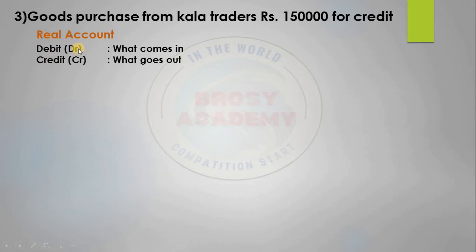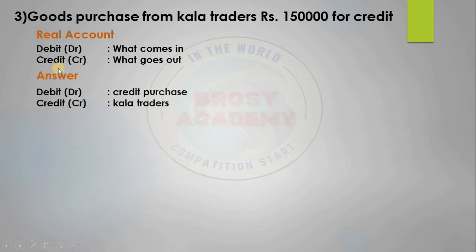So debit — what comes in — is purchase. Credit — what goes out — is Color Traders. This is our answer: debit purchase, credit Color Traders.